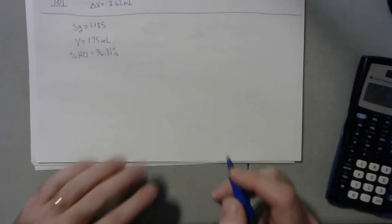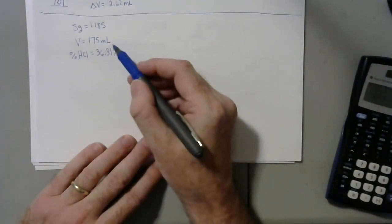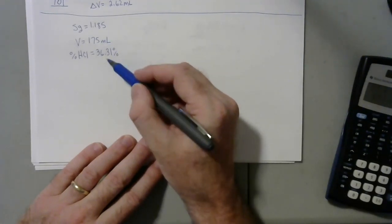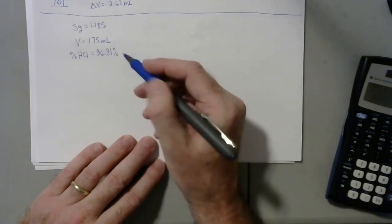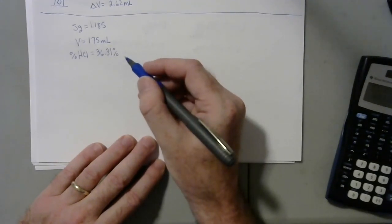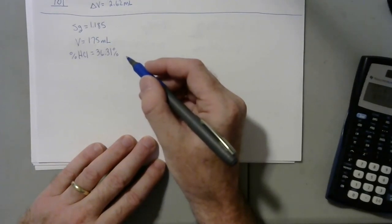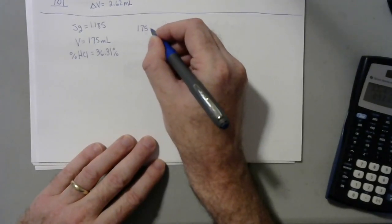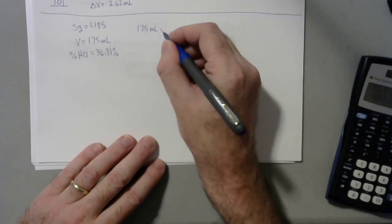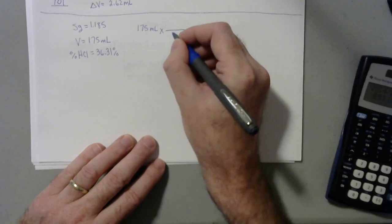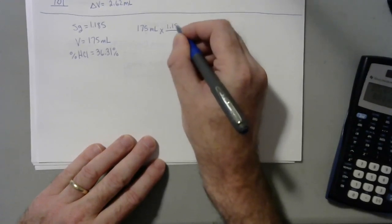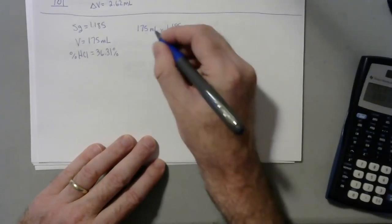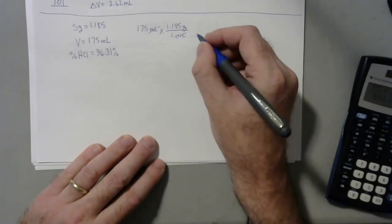All right, this last problem, we've transferred the data over, so we've got 175 milliliters of HCl solution with that specific gravity and that percentage by mass. We can work towards the mass of the HCl in the solution. So if we start with the volume, 175, we're going to use 1.185 grams per 1 milliliter. Milliliters cancel. And so I just used it like a density.